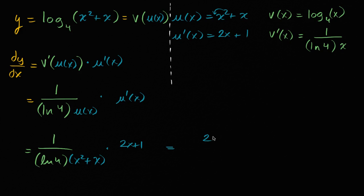And so we can just rewrite this as two x plus one over the natural log of four times x squared plus x, and we're done. We could distribute this natural log of four if we found that interesting, but we have just found the derivative of y with respect to x.